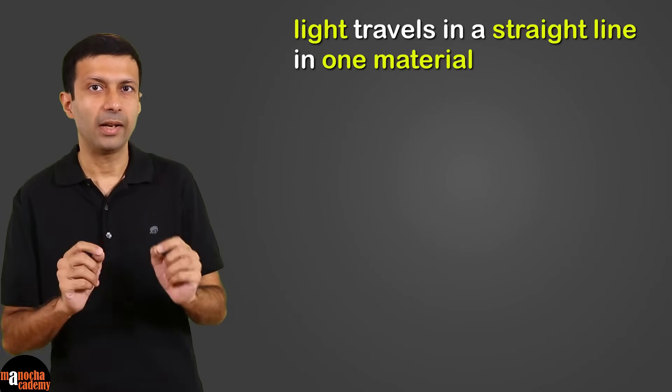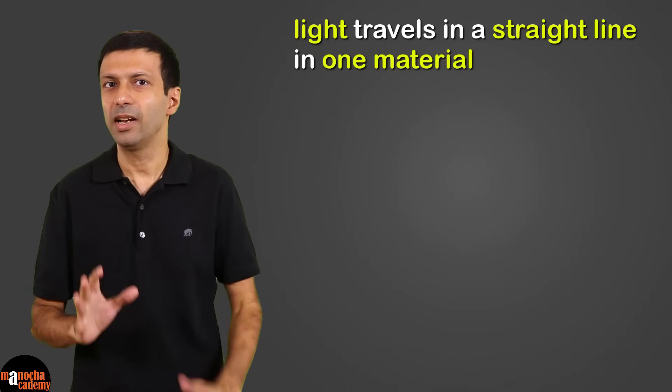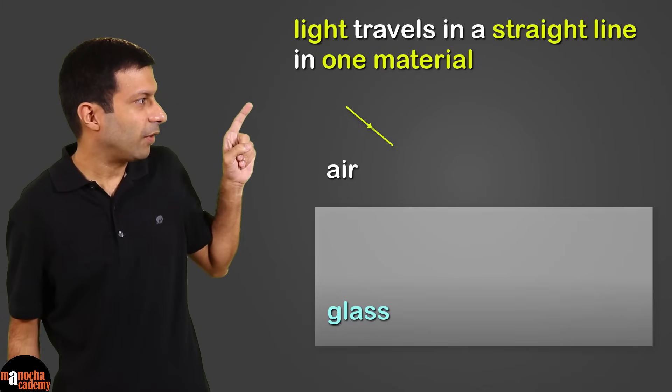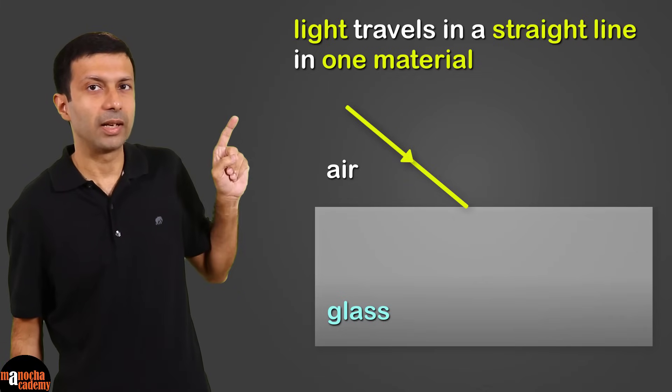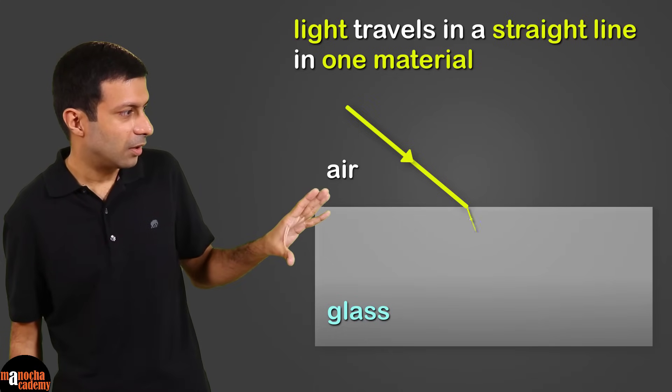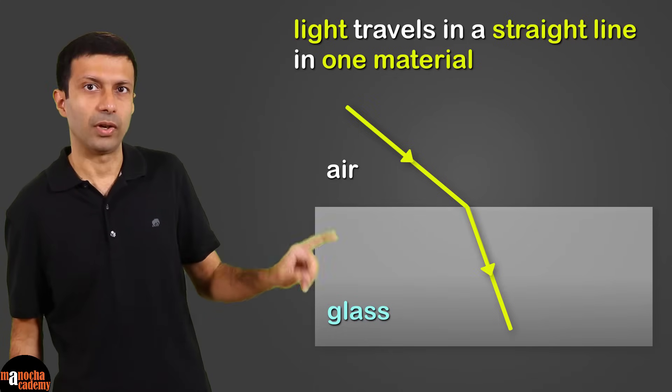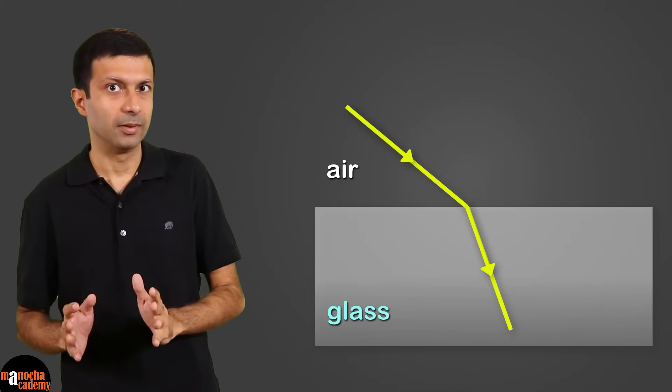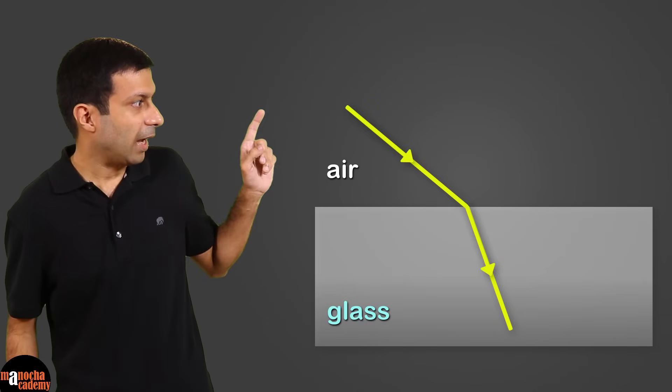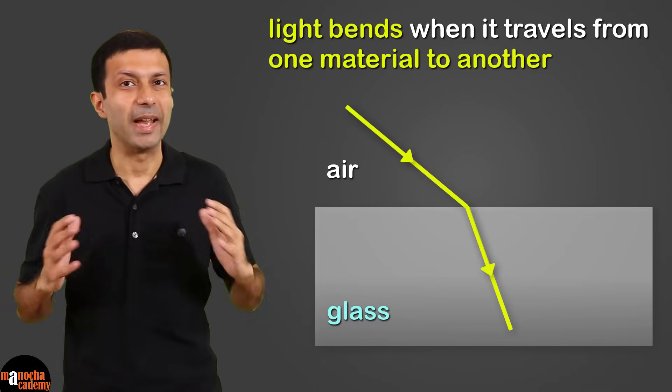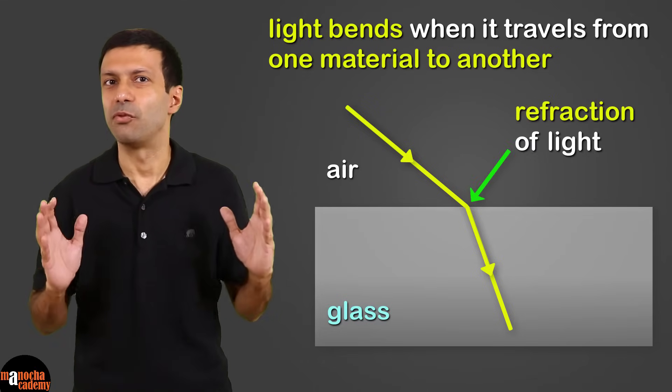So what have we learned till now? Light travels in a straight line as long as it's traveling only in one material. So as we saw here, as long as it's traveling only in air, it's traveling in a straight line. And then if you look only at the glass part, light is traveling in a straight line. But when light travels from one material to another, so here from air to glass, it bends. And this bending of light is called refraction of light.